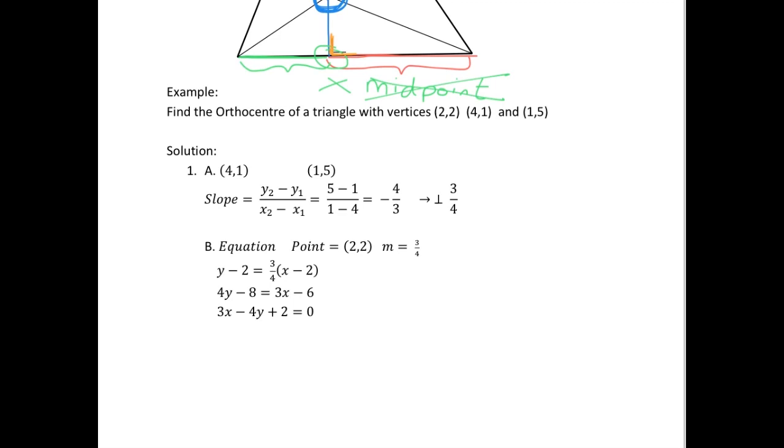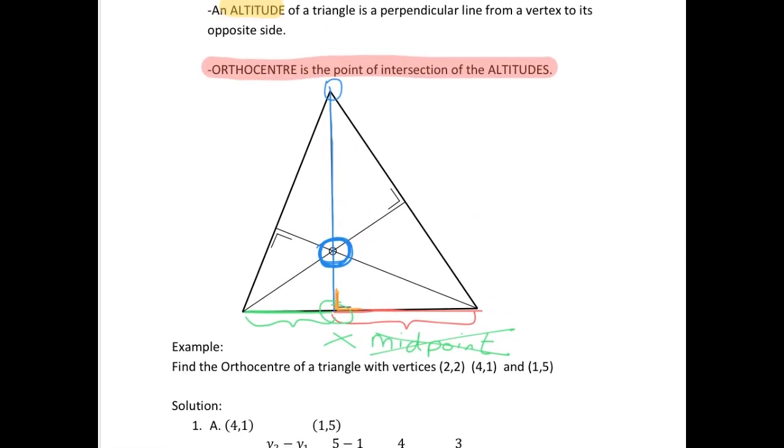So again we're going to have to find the equation of two of these altitudes. So we're going to need a point on the line and we're going to need the slope. A point on the line where we can see that each of these lines goes through one of these vertices. So we can take one vertex and the slope of this line is perpendicular to the slope of the opposite side. So if we get the slope between this point and this point and find the perpendicular slope, that will give us the slope of this line here.